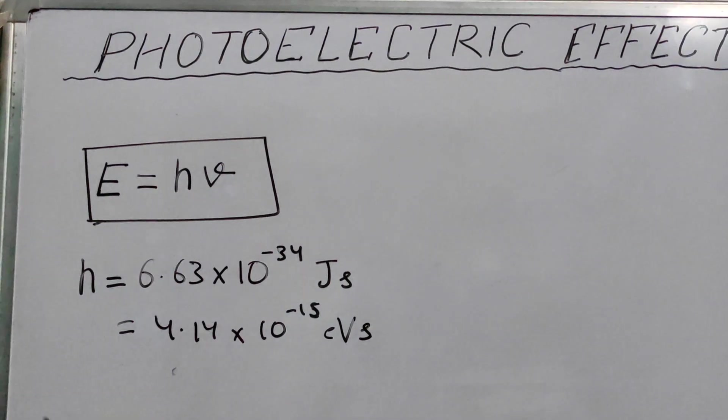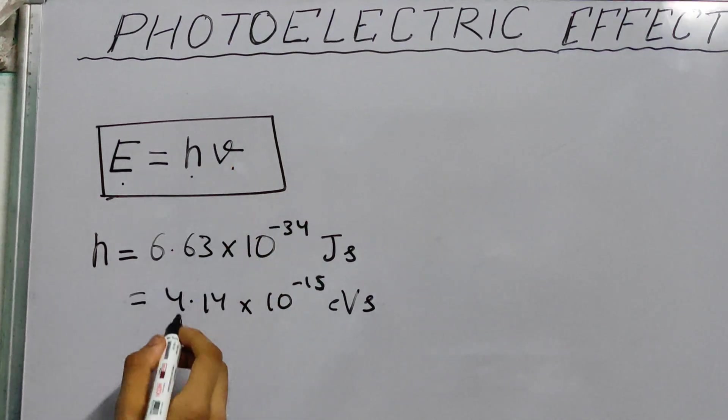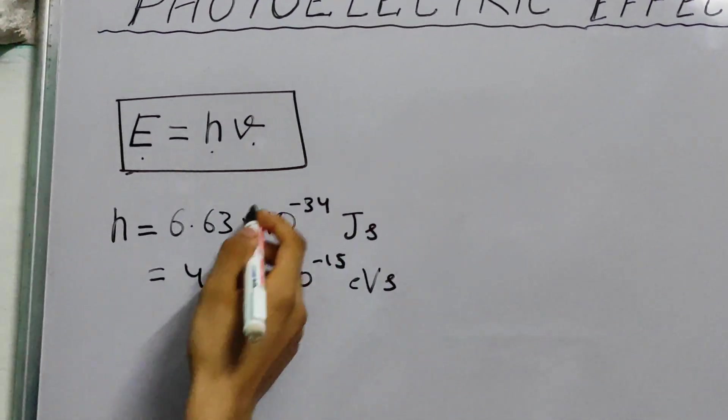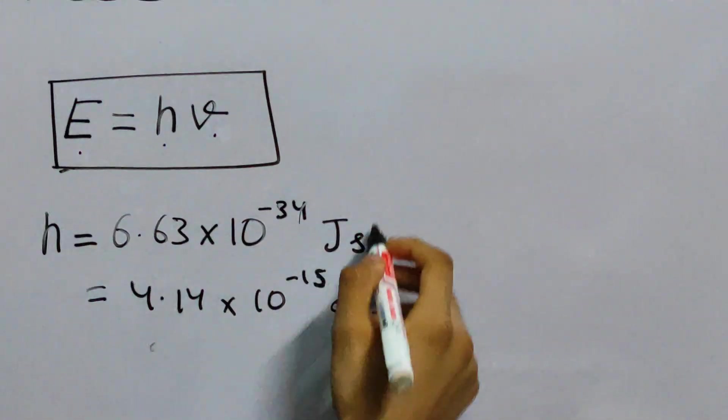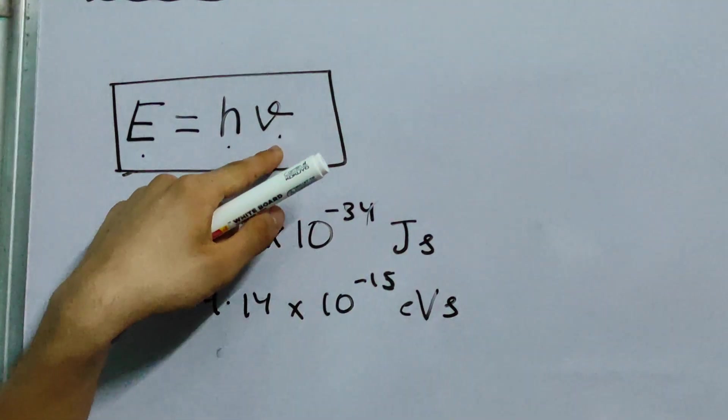You can check this dimensionally. You have energy here, you have joule second, and you have second inverse, second to the power minus 1. Second will cancel out, we are left with joules, energy. This is the energy associated with one photon.